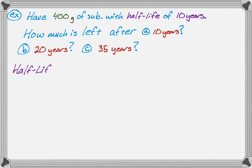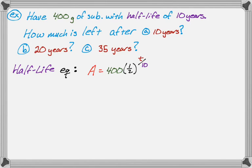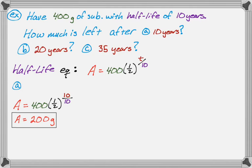We substitute in the things we know. A equals 400 times one-half to the t over 10. For part A, t equals 10, so it's 400 times one-half to the 10 over 10 — that's 400 times one-half to the first power, which is obviously 200 grams.